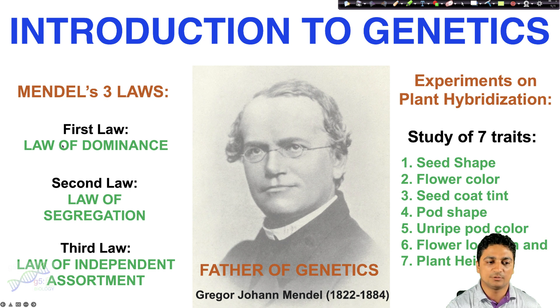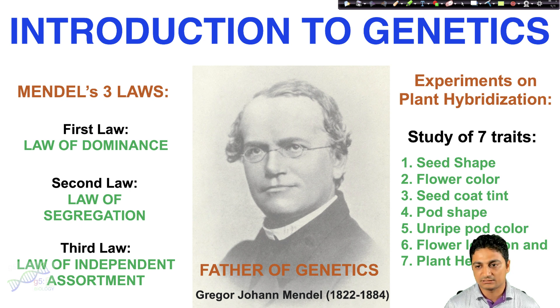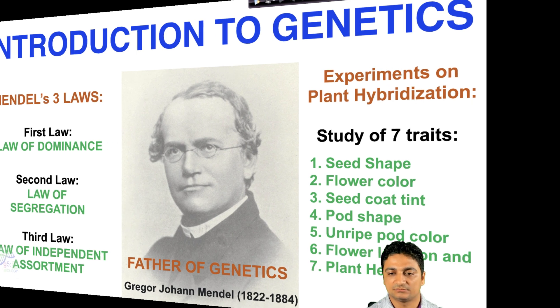Those laws are called the law of dominance, law of segregation, and law of independent assortment. These laws are the basics of modern genetics, which is why he is also called the father of modern genetics.